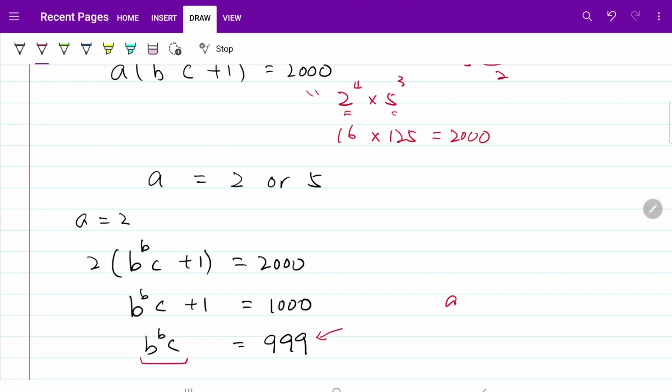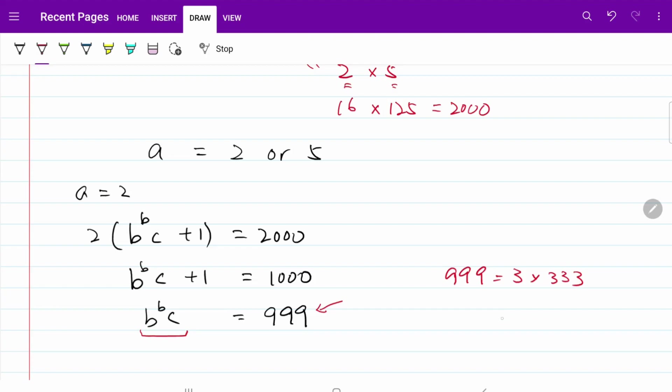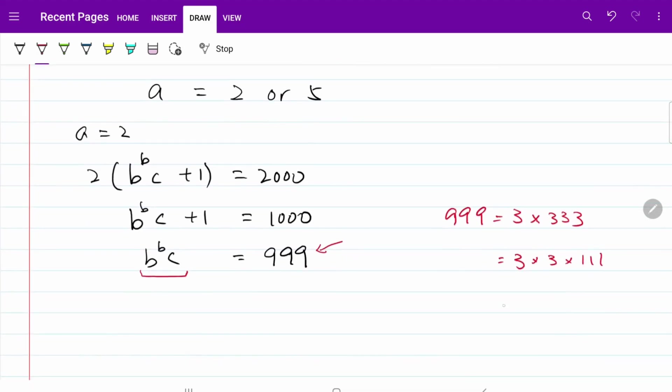I have 999 is obviously equal to 3 multiplied by 333. From here, I know that 3 is a prime number, so let's work on 333. It will be 3 multiplied by 3 multiplied by 111. Continue to break it down, that's equal to 3 times 3 times 3 times 37.